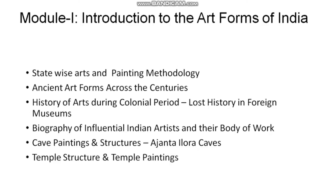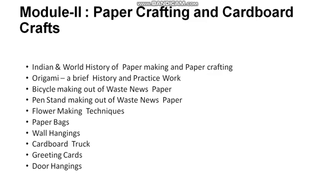Let us go through all the modules briefly. Module 1 is Introduction to the Art Forms of India. India has a very rich and great history about arts and different art forms. Every state has something to offer in the field of textile art, wall paintings, or pottery formations. We have included state-wise arts and painting methodologies, ancient art forms across the centuries, history of arts during the colonial period, lost history in foreign museums, biography of influential Indian artists and their body of work, cave paintings and structures especially Ajanta and Ellora caves, and temple structure and temple painting.